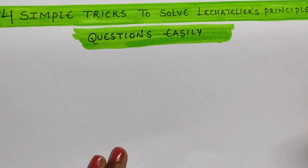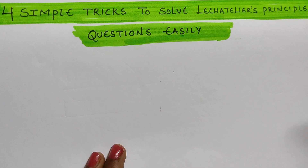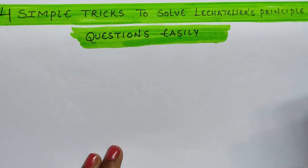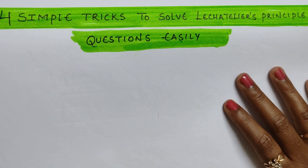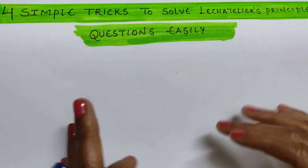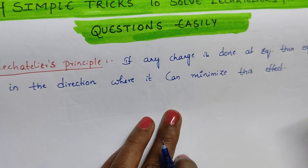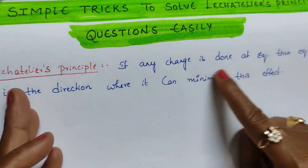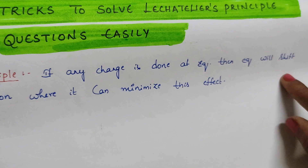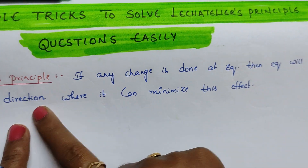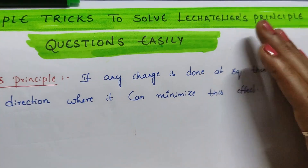Hi students, in this session I am going to teach you four simple tricks to solve Le Chatelier's Principle based questions easily. Let us see first what Le Chatelier's Principle says: if any change is done at equilibrium, then equilibrium will shift in the direction where it can minimize the effect.